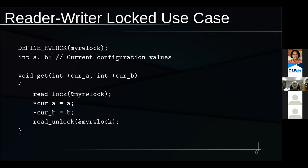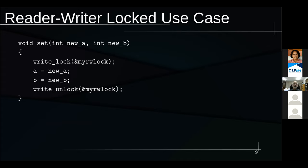We have a get function — you pass it the place to put A and B. cur_a and cur_b are both pointers to places to store the current configuration values. We do a read lock on myrwlock, and once we've got that lock we pick up A and B through their respective pointers. Because we hold the lock in read mode, no writer can happen, so we're guaranteed consistent values of A and B. We release the lock, updates can happen, and life is good — and we can in theory have concurrent readers.